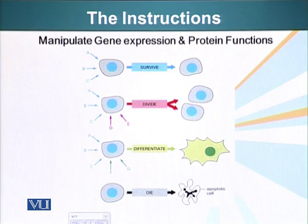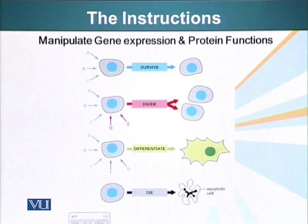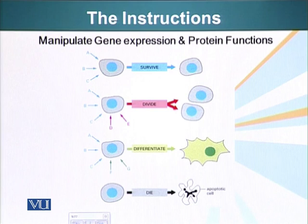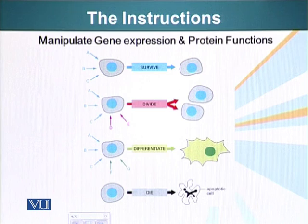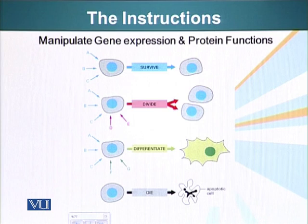First of all, signaling systems tell cells to survive. Without the signaling system, cells will not be able to survive. In our body, cells in different organs keep falling off. We shed skin — many skin cells fall every day. If a liver cell fell off the liver, entered the bloodstream, and settled in the heart or brain and started growing, it would be catastrophic. The extracellular matrix in these organs continuously signals cells to survive; without that, they cannot.